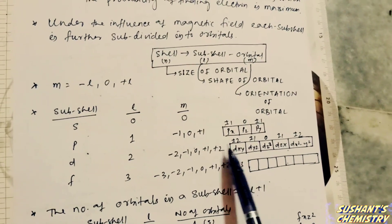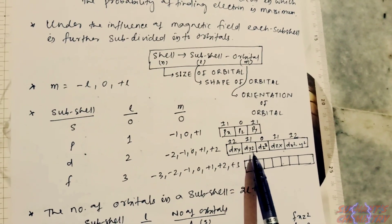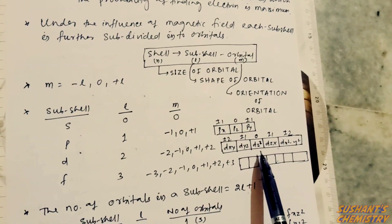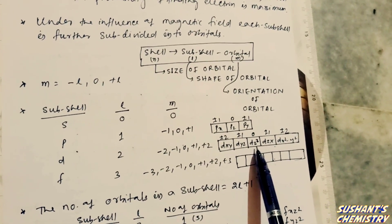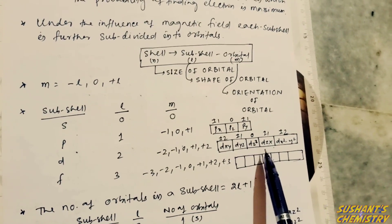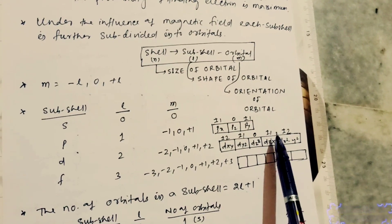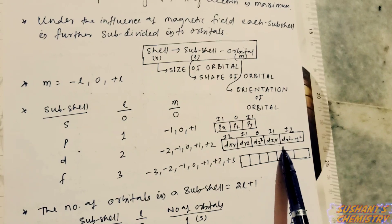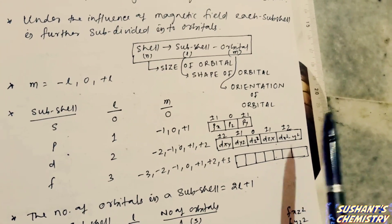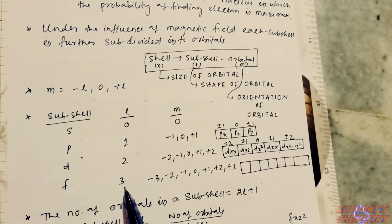The value of m for the dxy orbital is plus or minus two; for the dyz orbital it is plus or minus one; for the dz² orbital it is zero; for the dzx orbital it is plus or minus one; and for the dx²−y² orbital it is plus or minus two.